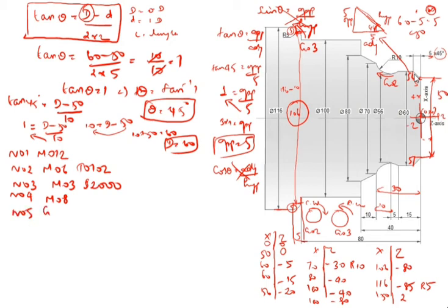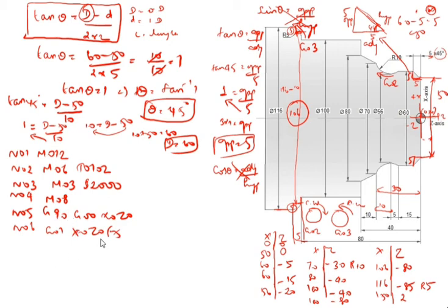N05 G90 X0 Z0 — G90 is absolute program; X and Z values start from 0. N06 G01 X0 Z0 F5 — G01 is starting the program from here. X0, Z0, feed rate is 5. If the feed rate is not specified, it defaults to 0.5, which means the process takes very little time. N07 G01 X50 Z0 — X is 50, Z is 0, so Z0 don't write.